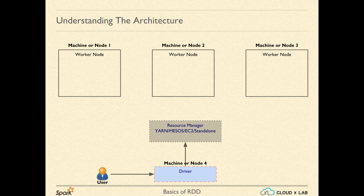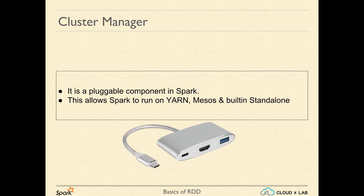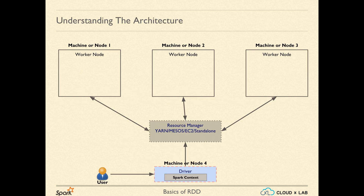It is easy to run Spark on a cluster manager such as Mesos or YARN that also support other applications. The cluster manager is a pluggable component in Spark to make Spark talk to any resource manager. Spark applications run as independent sets of processes on a cluster, coordinated by the SparkContext object in your main driver program. The SparkContext can connect to several types of cluster managers.